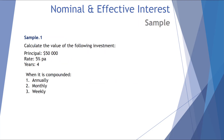So a few calculations. Sample problem number one: calculate the value of the following investment. We have a principal of $50,000, a rate of 5% per annum, invested for four years. We're going to investigate what happens when we compound it annually, monthly, and weekly.